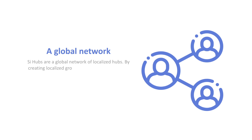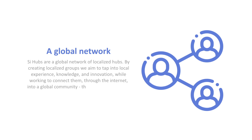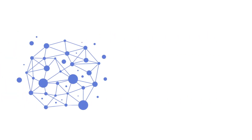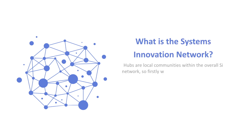This is a global network. SI hubs are a global network of local hubs, trying to get some synergy between the global and the local by creating local groups. We aim to tap into the local experience, knowledge, and innovation whilst working to connect them through the internet into a global community. We call that the Systems Innovation Network.